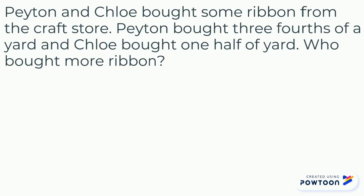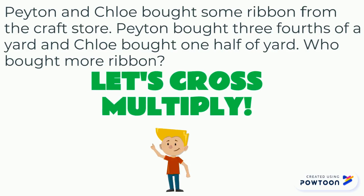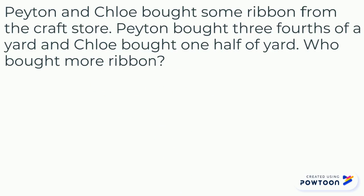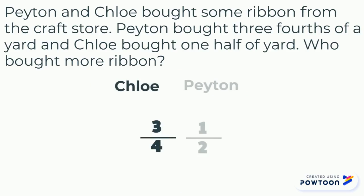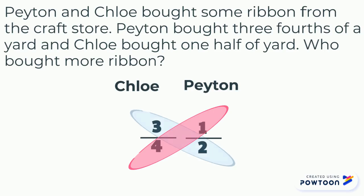We are going to solve this problem by cross-multiplying. First, write the two fractions side by side. Then, circle the denominator and numerator across both fractions. Now, the numbers that share a circle will be the factors that are going to be multiplied.